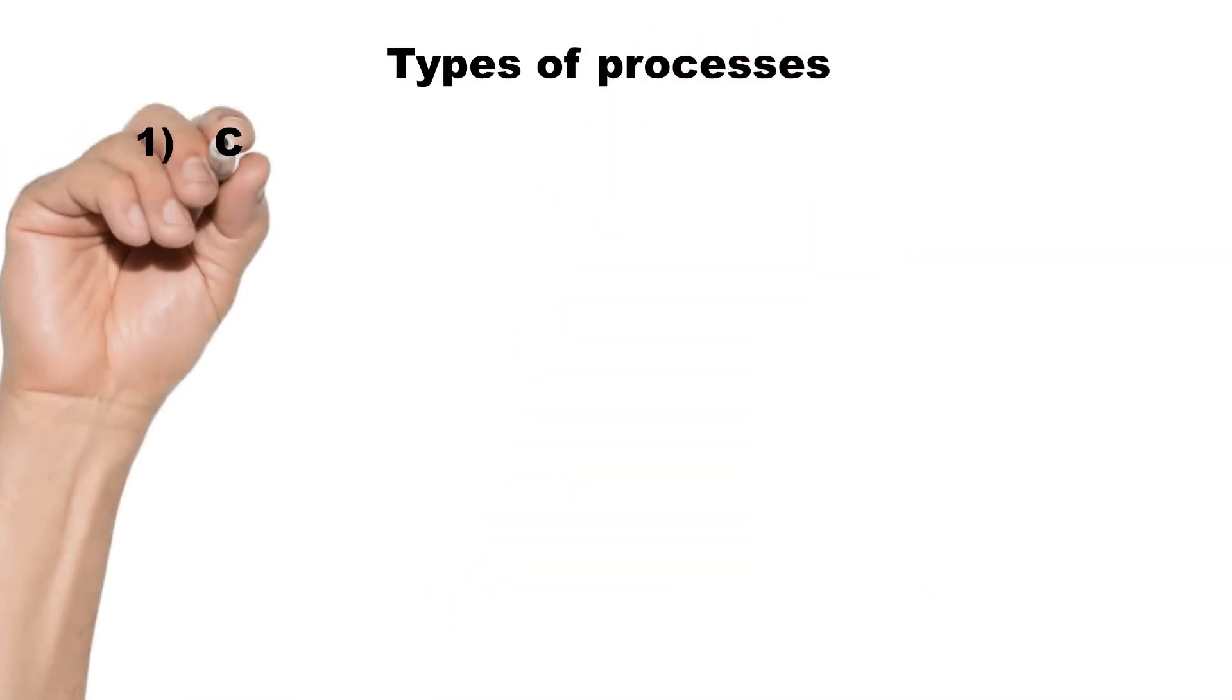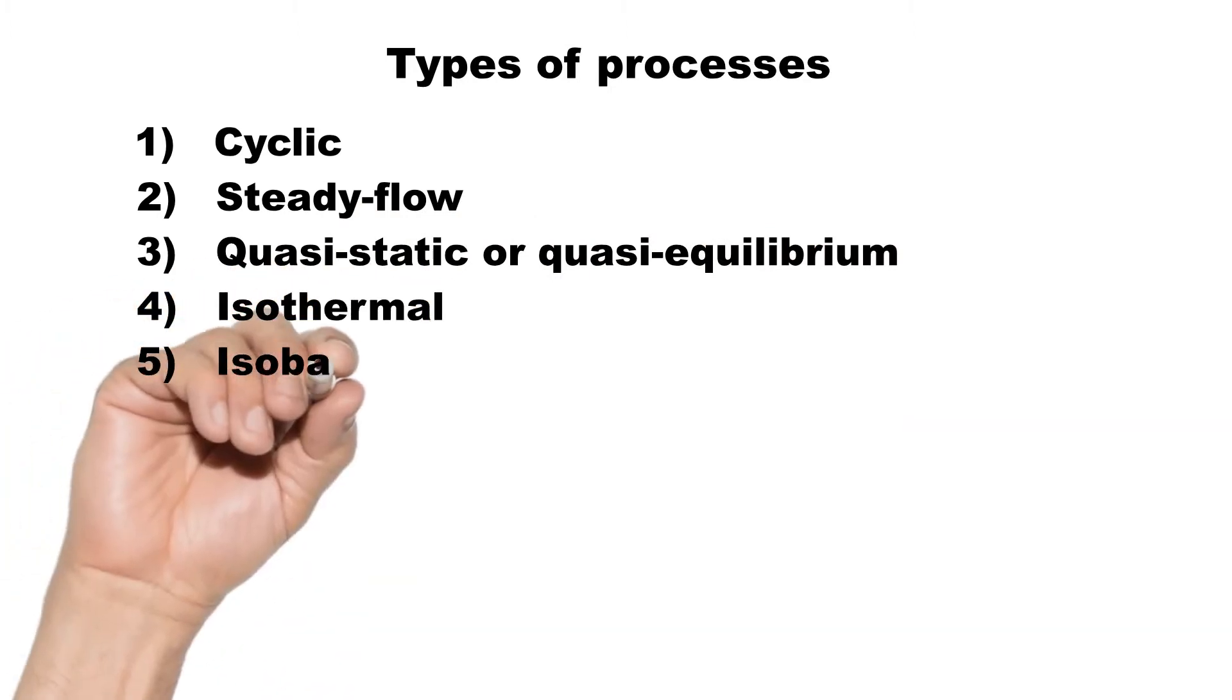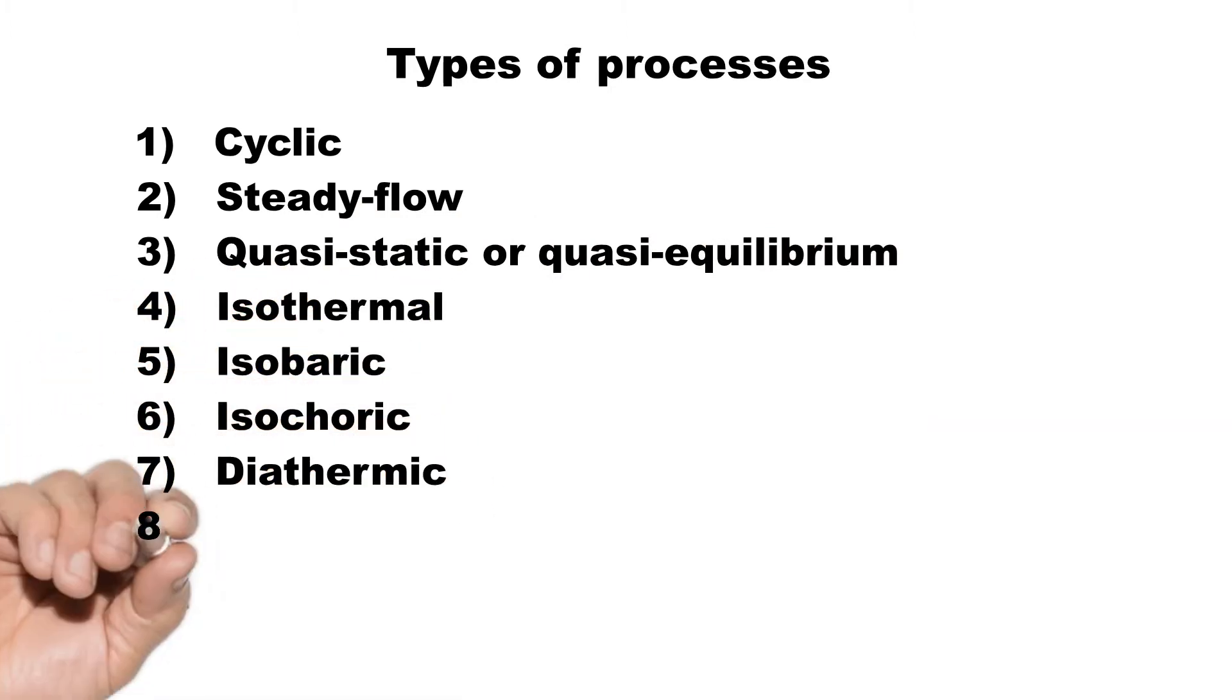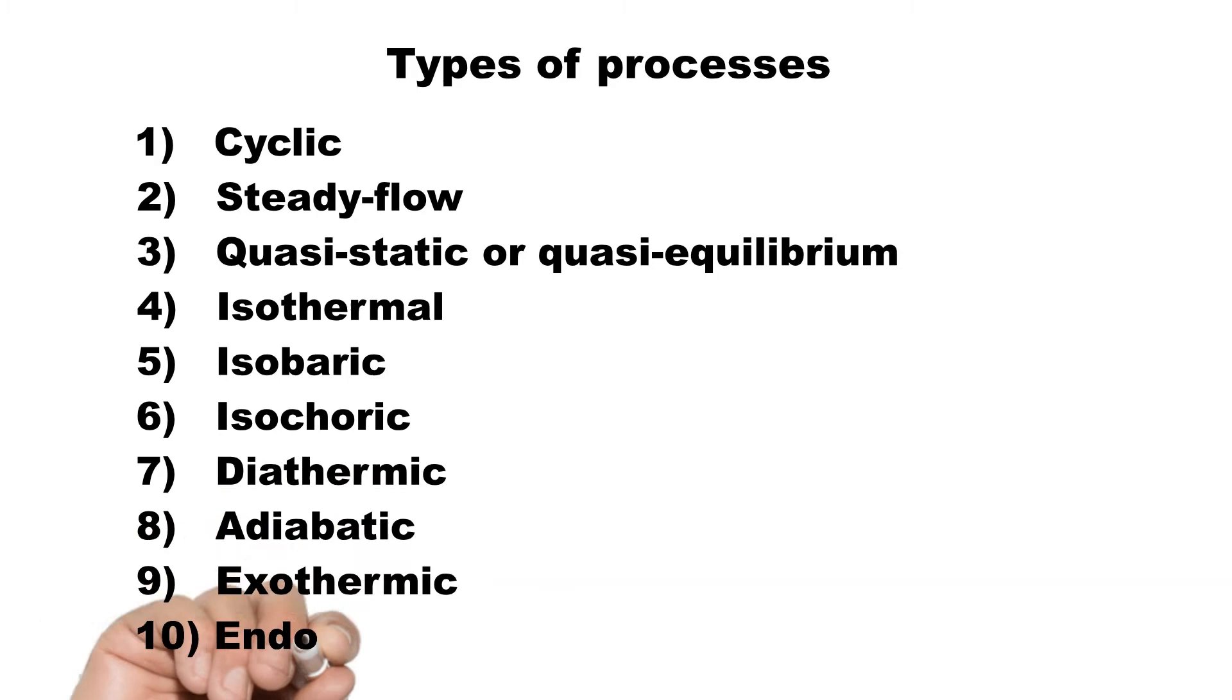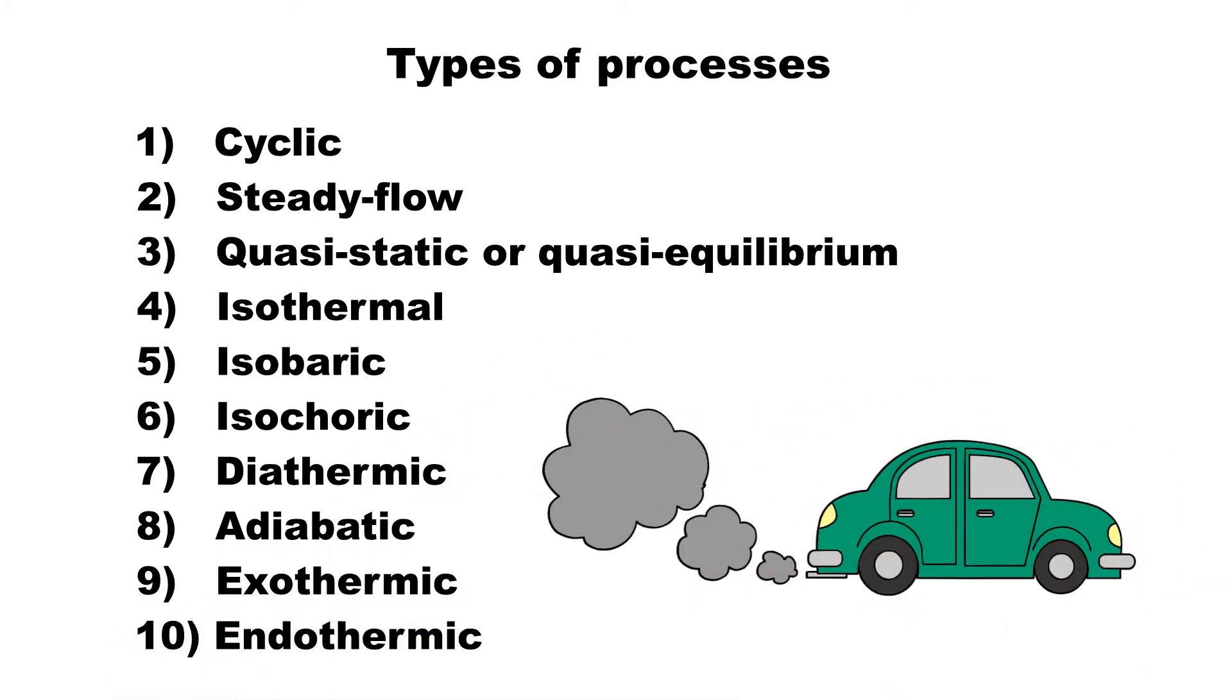Next, let's see the major types of process in thermodynamics. The processes that we are going to learn here are the cyclic, steady flow, quasi-static or quasi-equilibrium, isothermal, isobaric, isochoric, diathermic, adiabatic, exothermic, and endothermic processes.